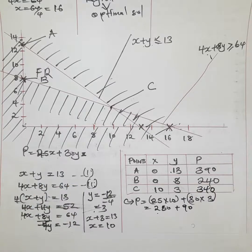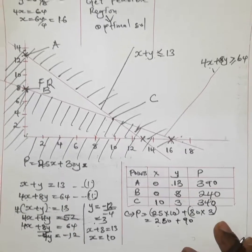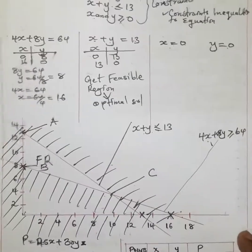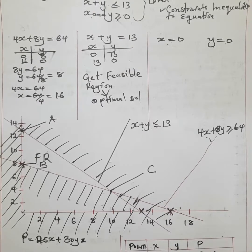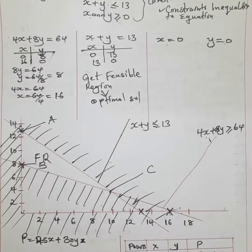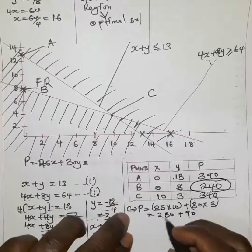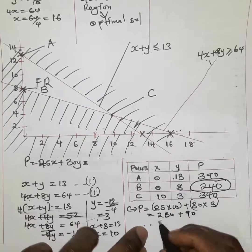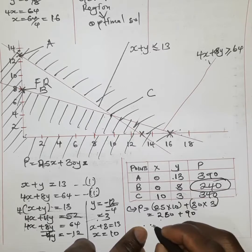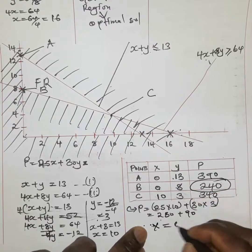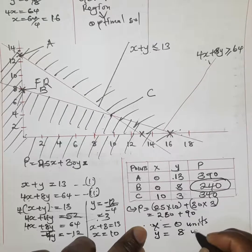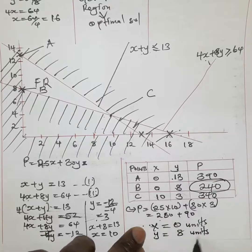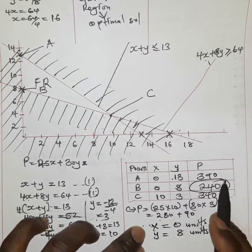From these values, our objective function is minimized at point B, where X is 0 units and Y is 8 units, giving a minimum value of P equal to 240. Thank you.